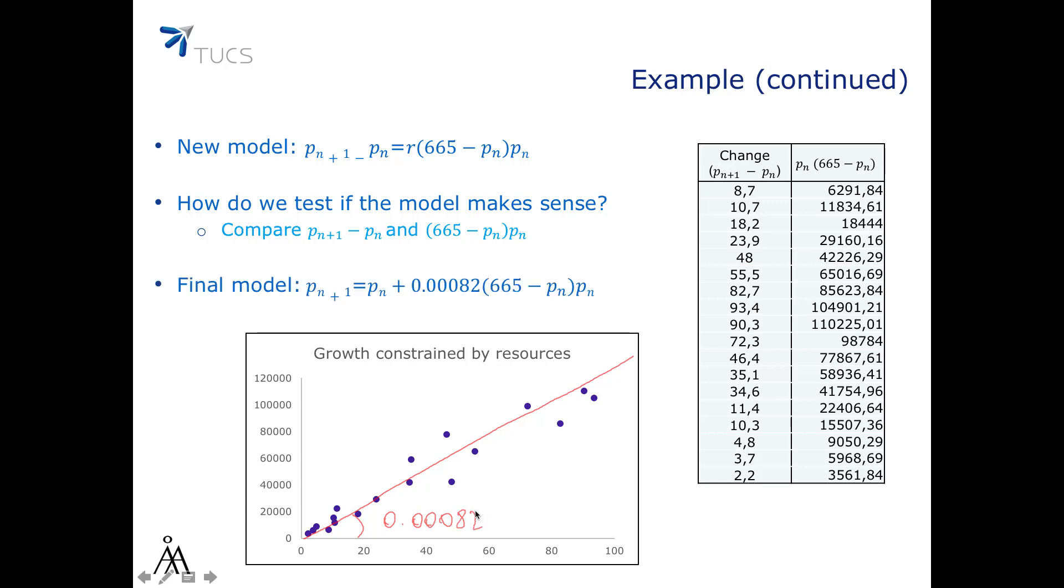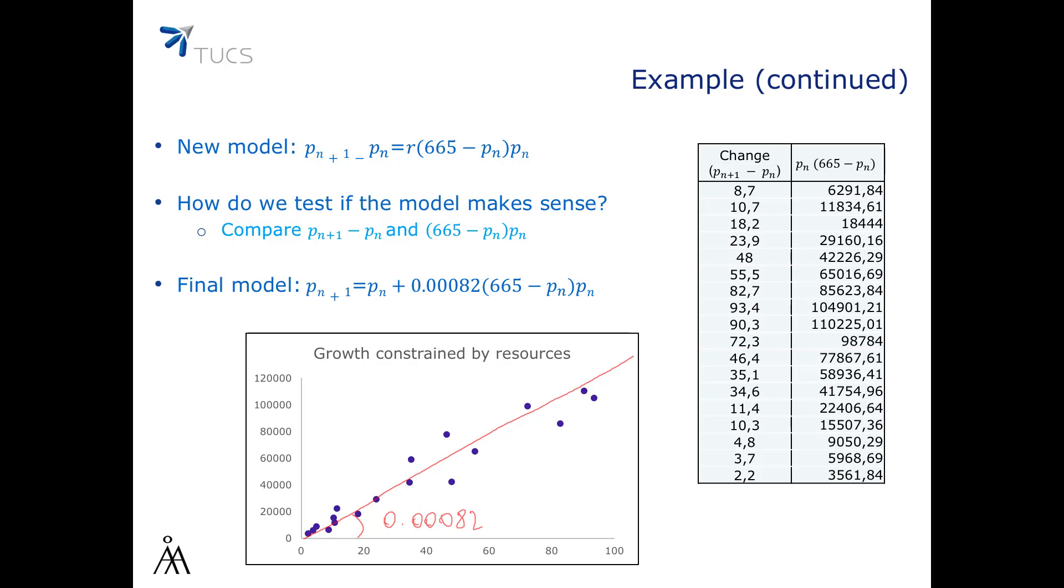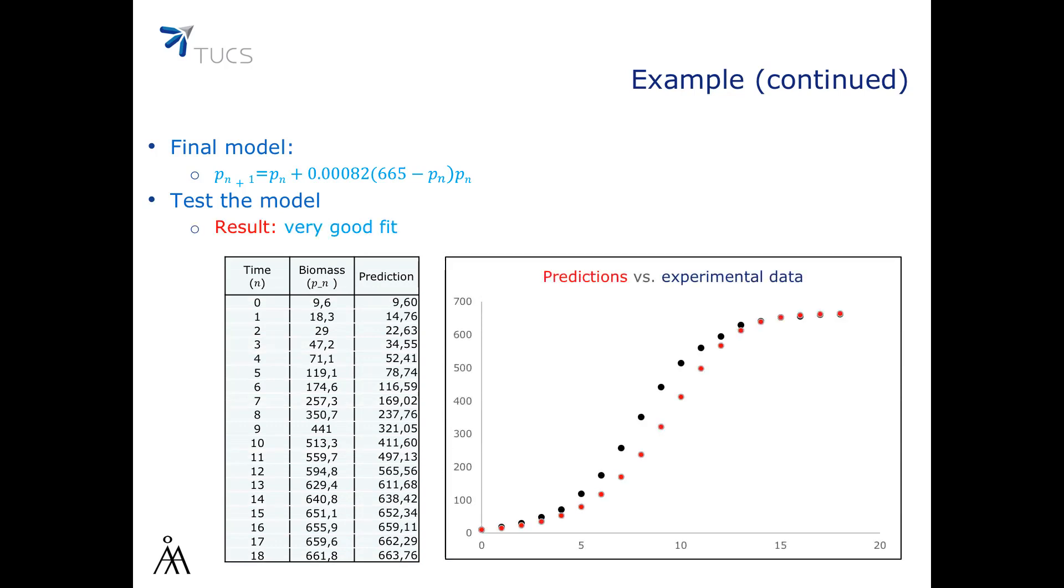So, our final model is P(n+1) equals P(n) plus 0.00082 times (665 minus P(n)) times P(n). To test the model, we can simply calculate the values according to the model we obtained and compare them against the experimental data. As we can see, the result is a very good fit. We will discuss later in this course how to measure the goodness of a fit. For now, we will only judge if the fit is good through visual inspection.